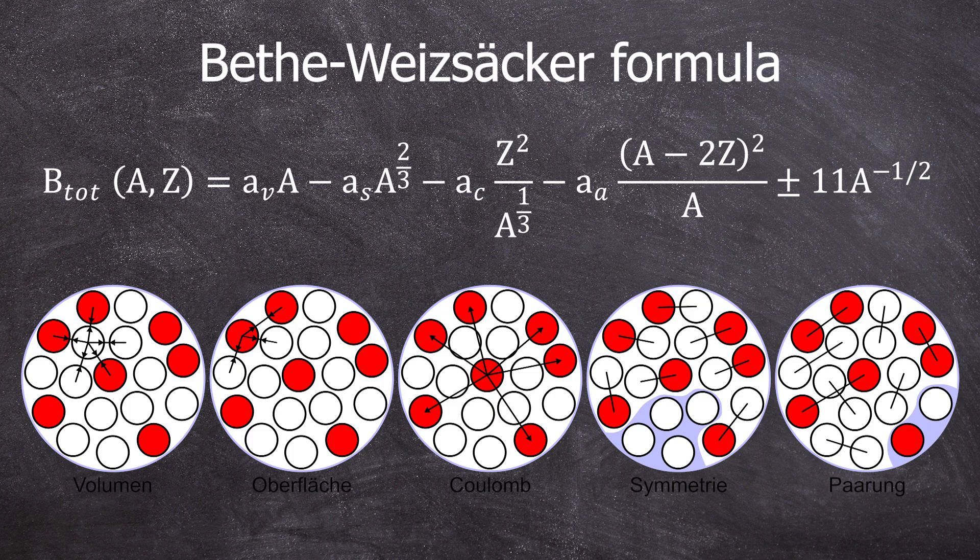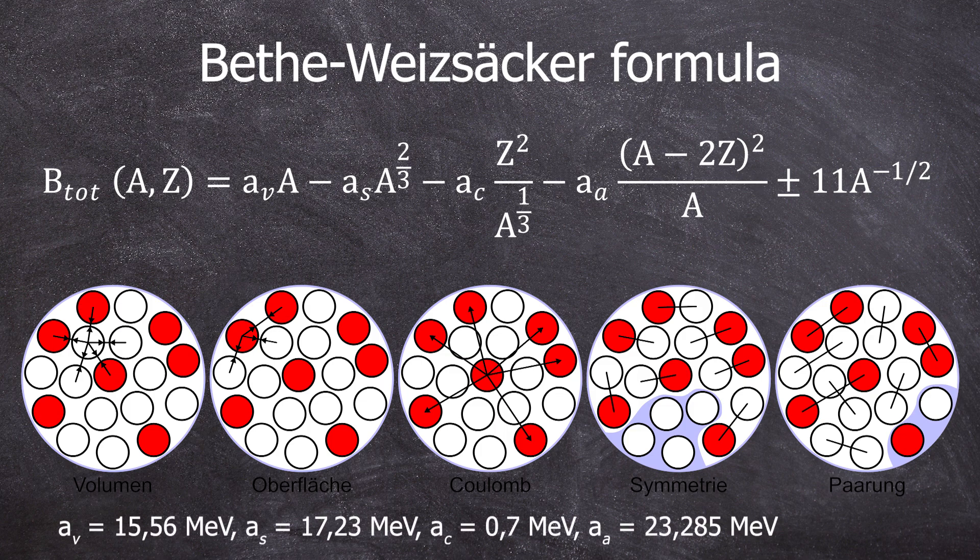So first of all, we see a V, a S, a C, an A, and a Delta. The formula is divided into five terms. And for each term, you need a constant that has been experimentally determined. This is what they look like in the third edition of Karl Heinrich Liese. There are still some outdated values. Well, the book is from 1991. There is a different notation for the fourth term, but we will get to that in a moment.